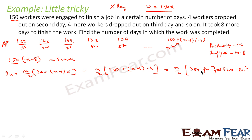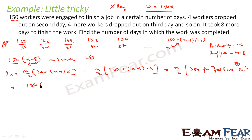This is the total work — the sum of all work per day. First day it was 150 man-work, second day 146, third day 142, and so on. In both cases the total work is the same because the work is the same; only the number of days differs. In case 1 the number of laborers is constant and they took n minus 8 days. In case 2 the laborers diminish by 4 each day and they took n days. So we equate: 150 × (n − 8) equals 152n − 2n².